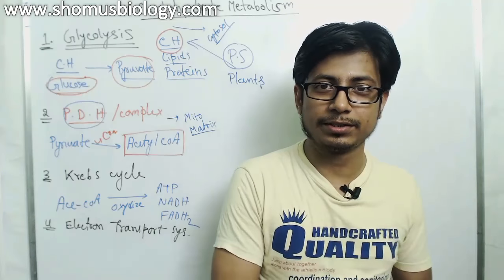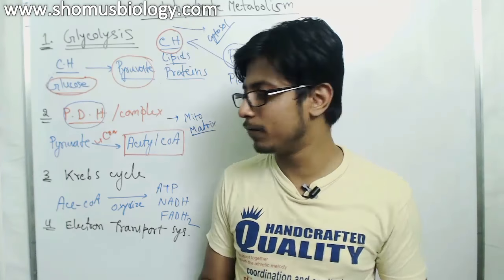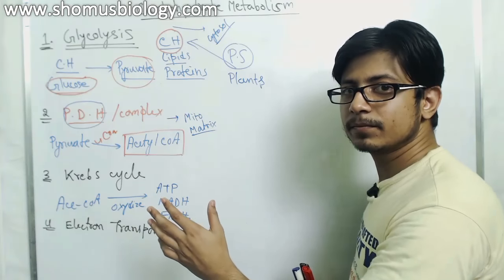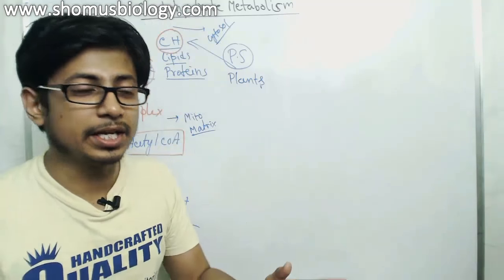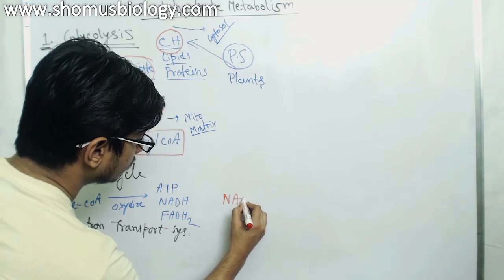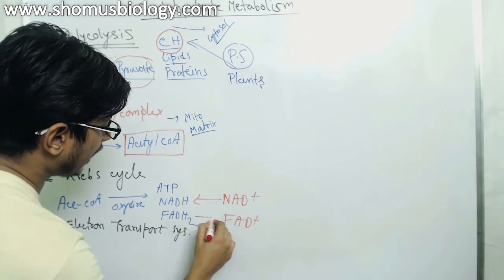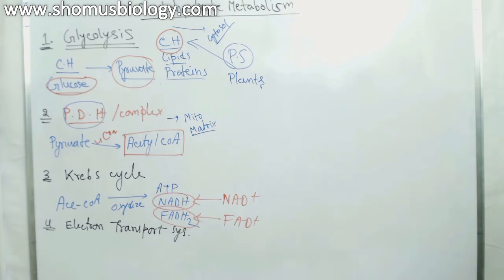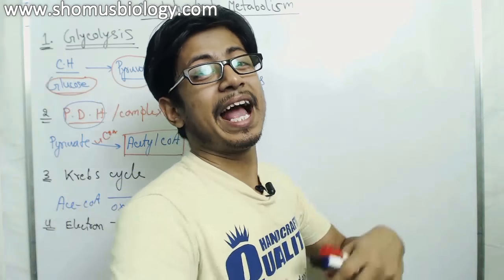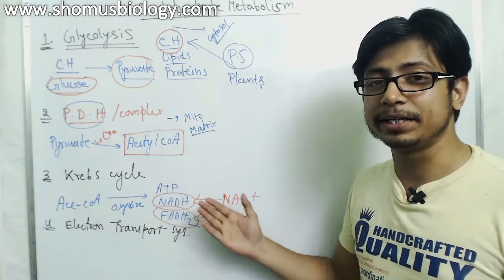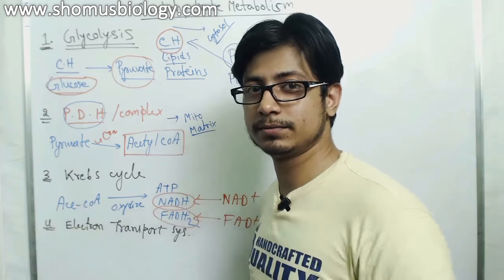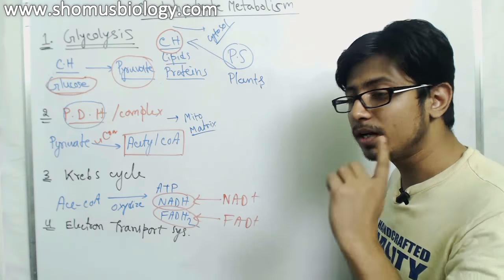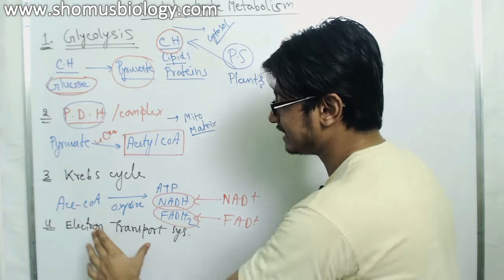Oxidation never occurs alone — it always works alongside reduction in a redox reaction. As acetyl-CoA and subsequent products are oxidized, NAD and FAD are reduced into NADH and FADH2. These molecules then serve as electron donors for the final step of aerobic cellular respiration: the electron transport chain.